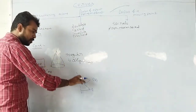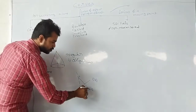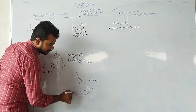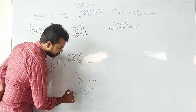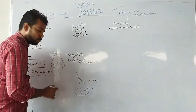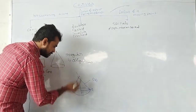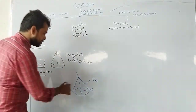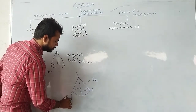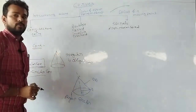For half a revolution B will be like this, and for another half it will go like this. Joining these gives you a right circular cone. A right circular cone is formed by the locus of a line — that line being a side of the right-angle triangle.